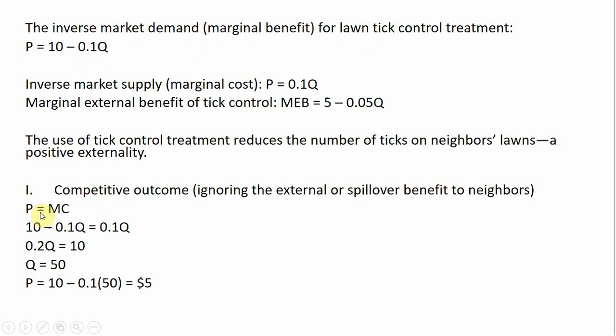All we're going to do is set price equal to marginal cost — find where the market demand intersects the market supply. Collecting the Q terms, the equilibrium quantity is 50 and the equilibrium price is $5. In the face of an external benefit, a positive externality, this market outcome will be inefficient. We will be under-providing the good.